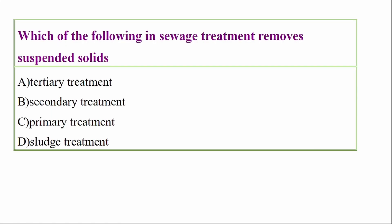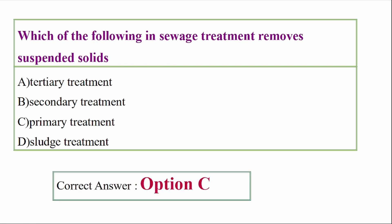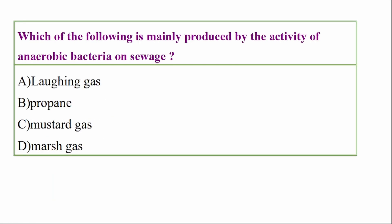Which of the following in sewage treatment removes suspended solids? Options: tertiary treatment, secondary treatment, primary treatment, sludge treatment. Answer option C: primary treatment.